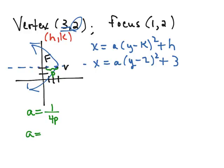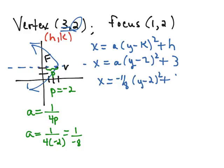That means that p is equal to negative 2, so we're going to have 1 over 4 times negative 2, so that means a is negative 1 eighth. So our equation is x equals negative 1 eighth of y minus 2 squared plus 3.